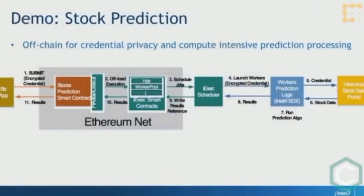The demo we'll talk about is a mock demo, shortcut in the interest of time. It's a stock prediction application. An enterprise on the left wants to get a prediction on stock for the next six months, and they are contracted with somebody on the right to get that data. We need to protect their credentials used to access the data, plus handle significant data mining of historical data. So we are off-chaining both the compute to the workers. I'll now turn over to Francois.